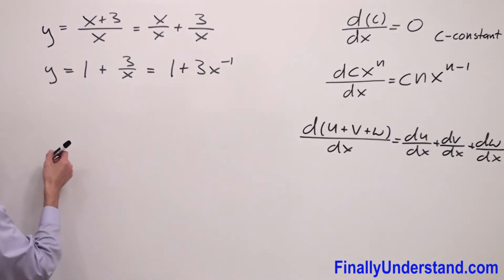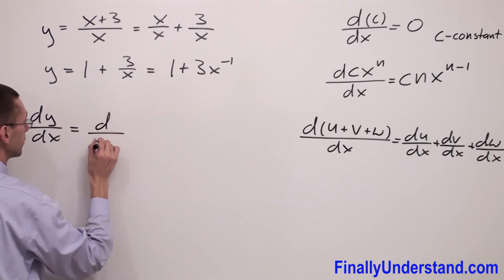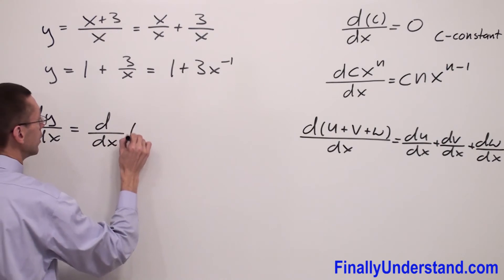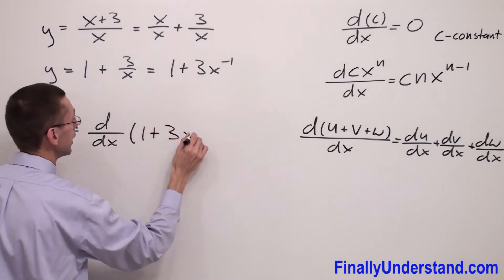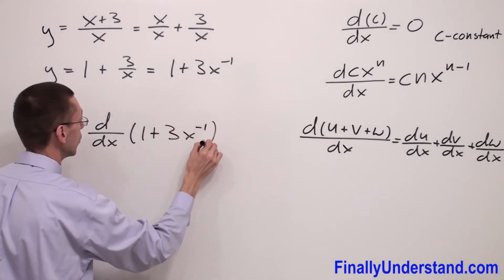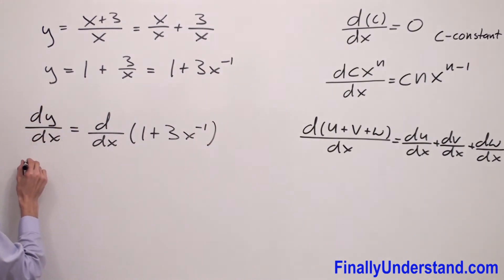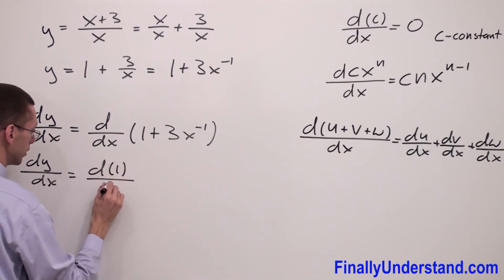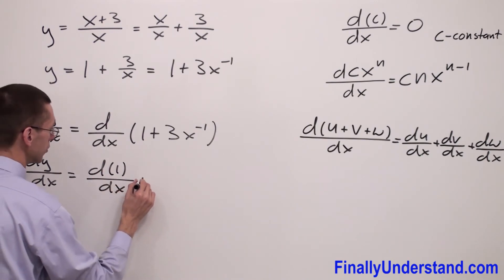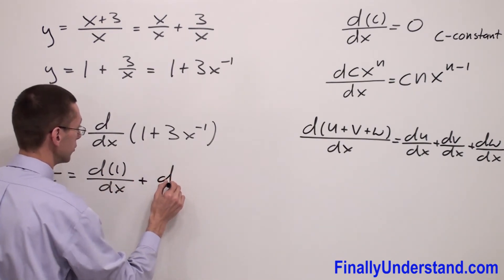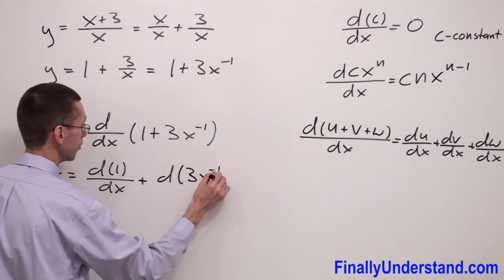So I have dy over dx is equal the derivative of 1 plus 3x negative 1. So this is equal dy over dx is equal derivative of 1 over dx plus the derivative of 3x minus 1 with respect to x.